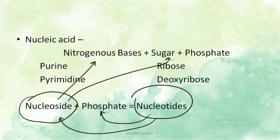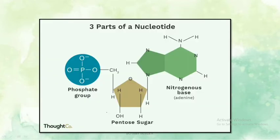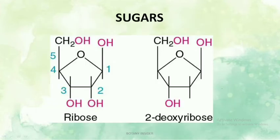Talking about the parts of a nucleotide, there are three parts: first, the phosphate group; second, the pentose sugar; and third, the nitrogenous bases.